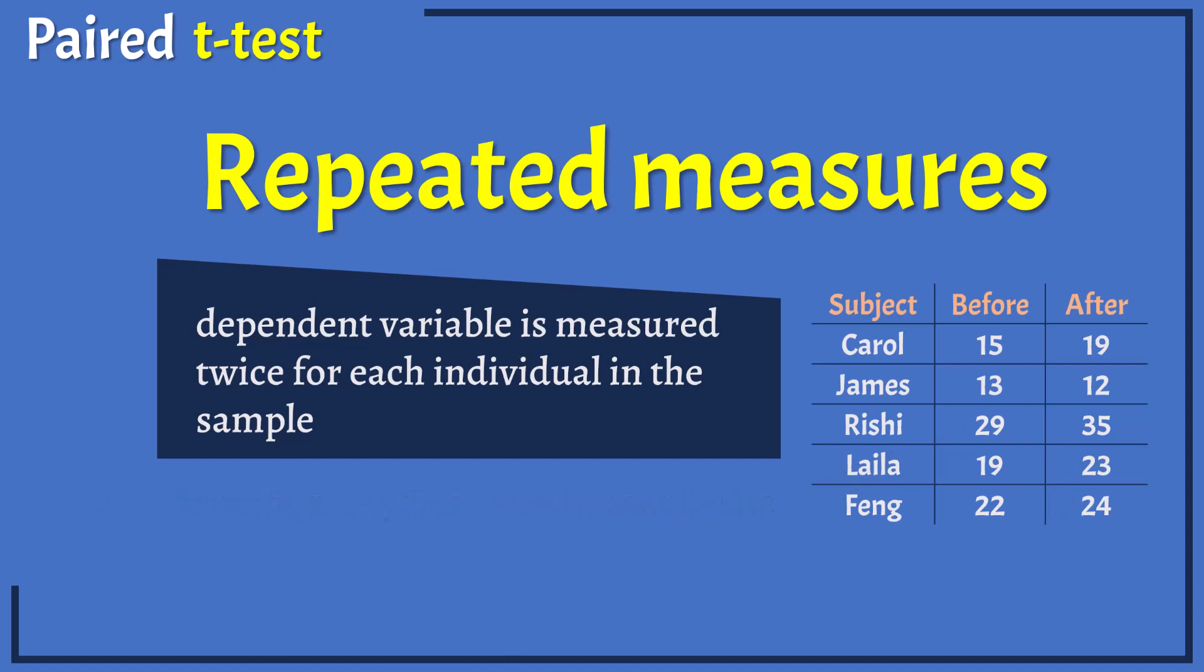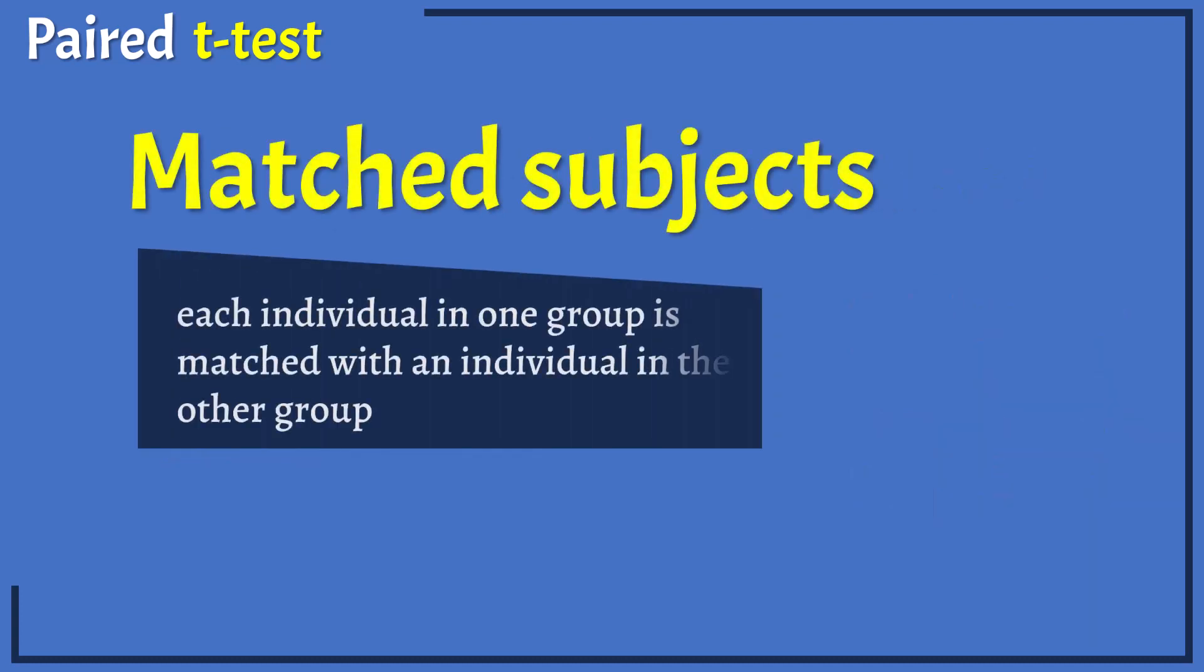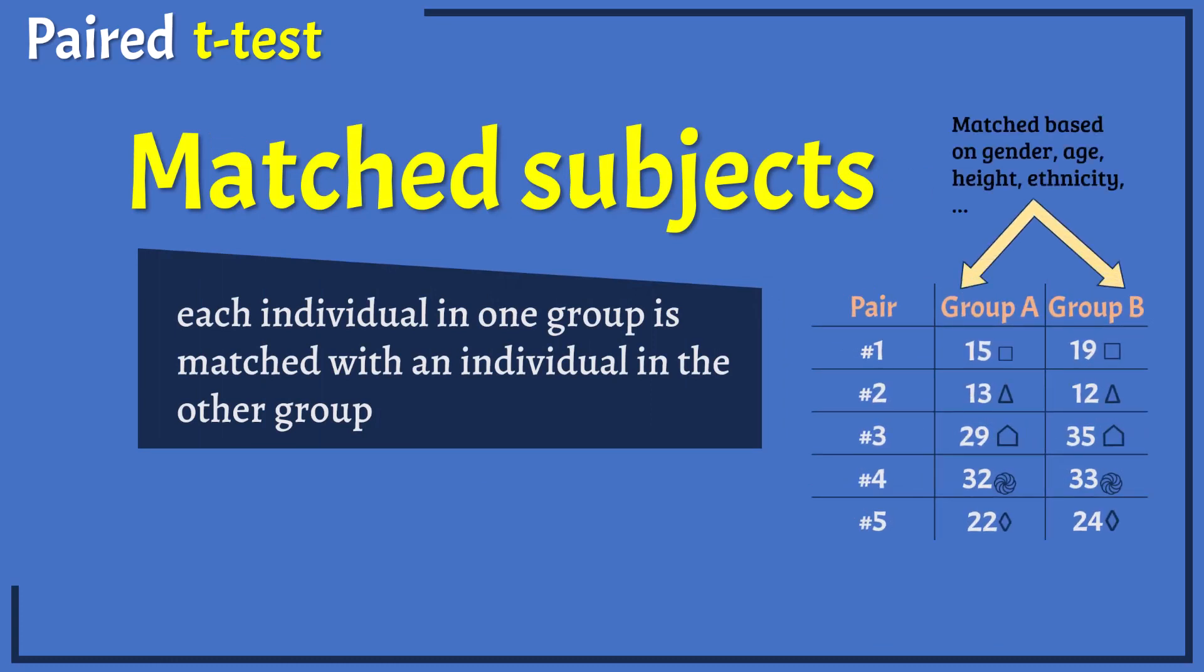Another paired t-test design is the matched subjects design, where each individual in one group is matched based on some common attributes of interest with an individual in the other group. Note that matched subject design requires twice as many individuals as the corresponding repeated measures t-test.